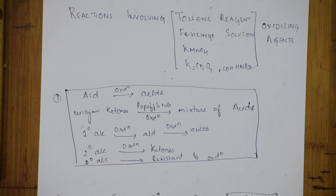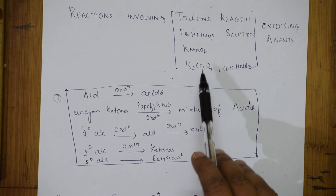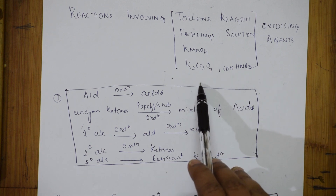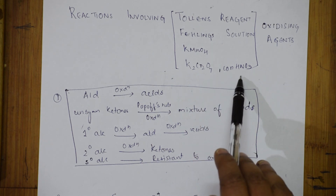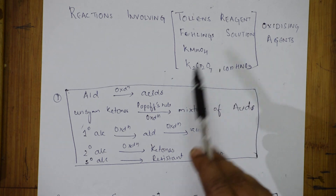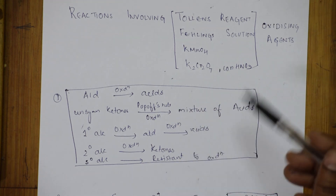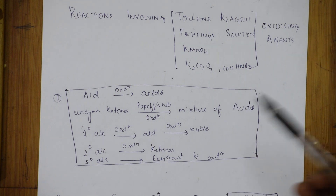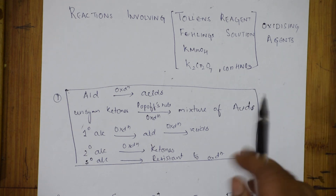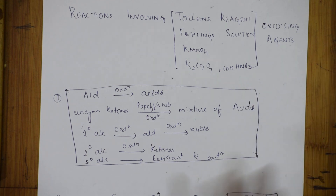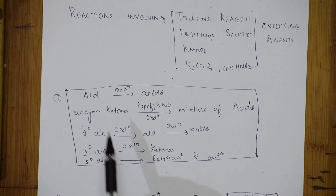Fehling solution has a copper salt — Fehling A and Fehling B. When you see KMnO4, potassium dichromate, and concentrated nitric acid, all these are oxidizing agents studied separately. We have already studied oxidizing agents, but this category let us learn separately.